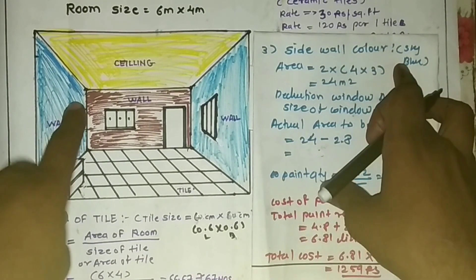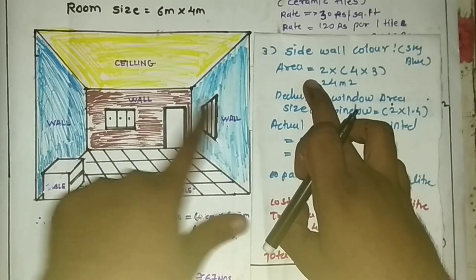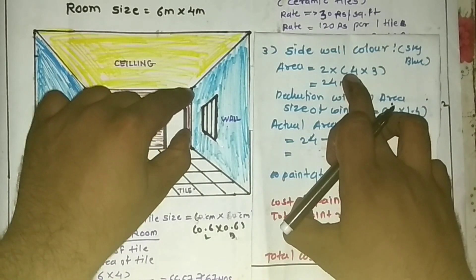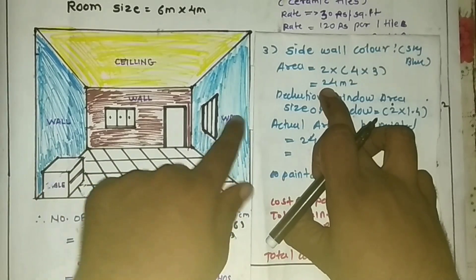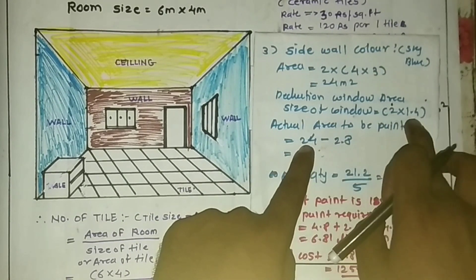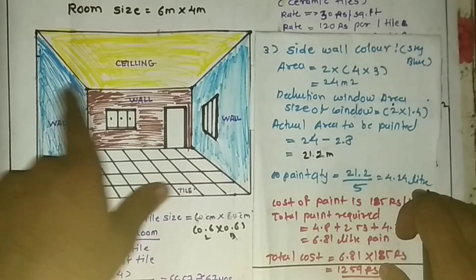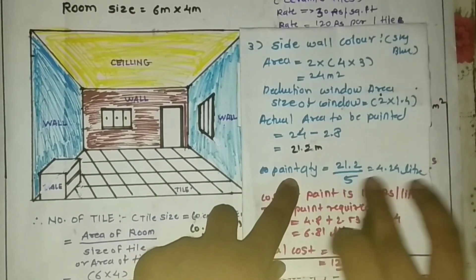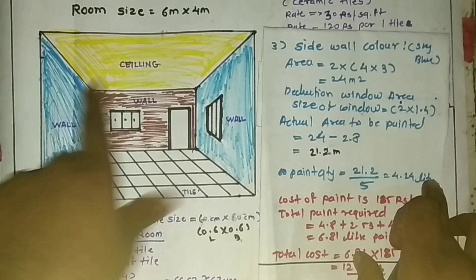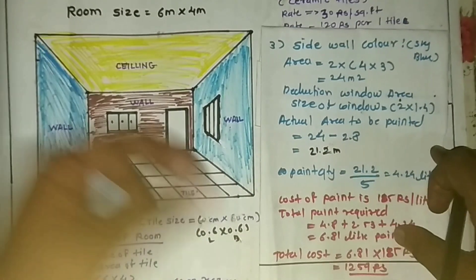Now for the side walls — the sky blue colored side walls. There are two side walls of the same size, so total area = 2 × (4 × 3) = 24 square meters. I deduct one window of size 2 × 1.4 = 2.8 square meters, giving an actual area of 21.2 square meters. Paint quantity = 21.2 ÷ 5 = 4.24 liters required to paint these two walls.